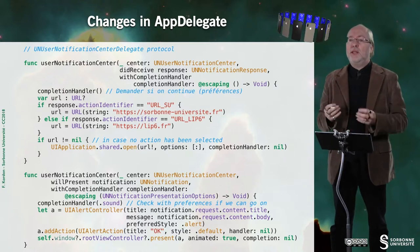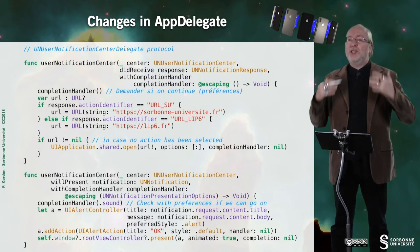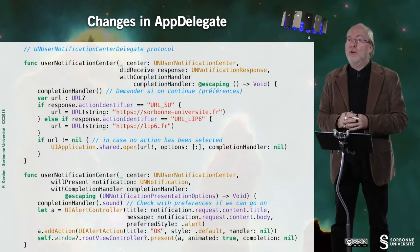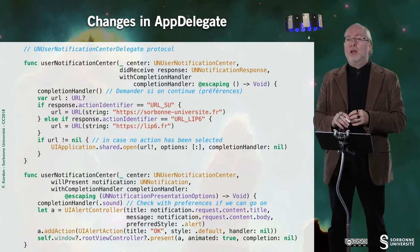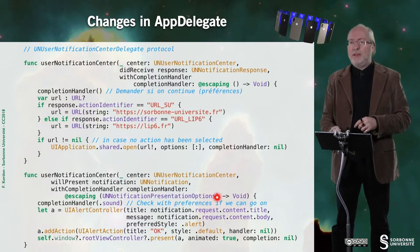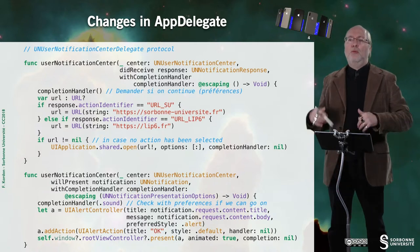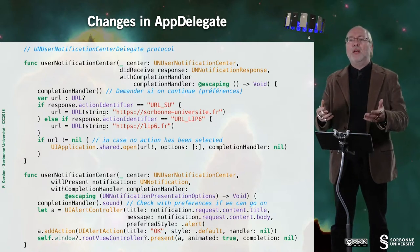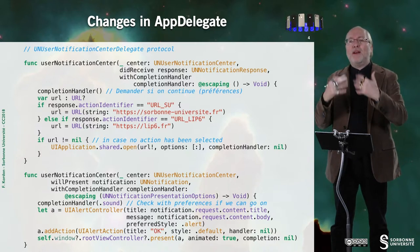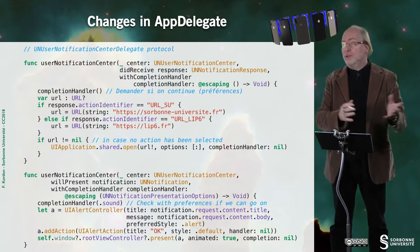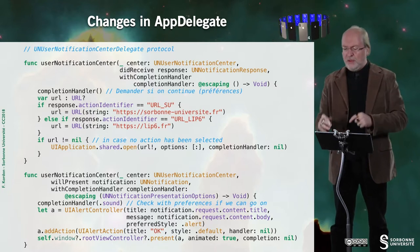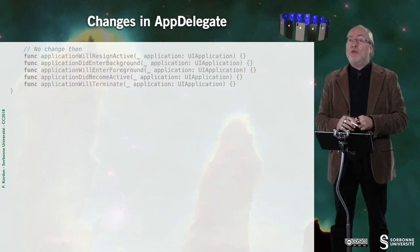The second method handles the fact that the notification is received while the application is running in foreground. Here I get this information and display a message — a UIAlertController stating that I have a given notification. I realize it would be better to invoke this method by providing some information, because the system is providing the completion handler for me. But it works well, as you saw in the demo. It's better to consider answering there. And that's all for the AppDelegate.